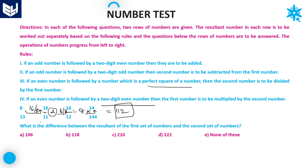Now let's see the second set of numbers. Odd number followed by a two-digit odd number — rule 2: second subtracted from first, 13 minus 11 equals 2. Then 2 is even followed by 12, a two-digit even number — rule 4: both multiplied, 2 into 12 equals 24.